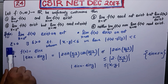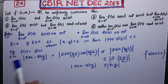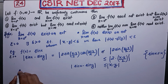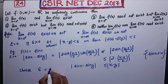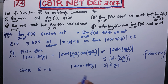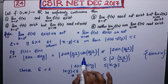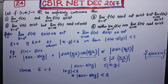Coming back to the definition: for every ε > 0, you need to find δ. Choose δ = ε. Then whenever |x − y| < δ, you will have |sin x − sin y| ≤ |x − y| < δ = ε. I have only used two identities: |cos x| ≤ 1 and |sin x| ≤ |x|. Hence the function sin(x) is uniformly continuous.